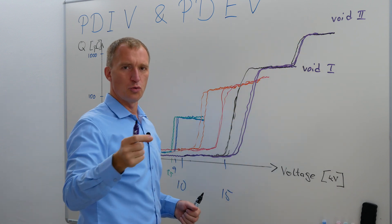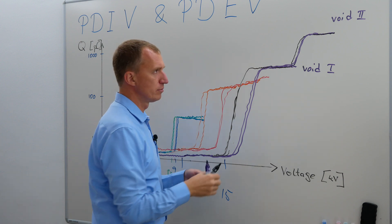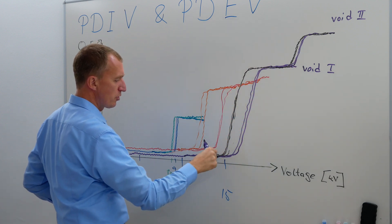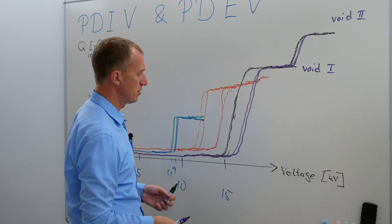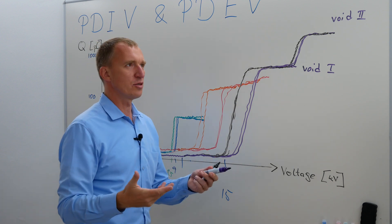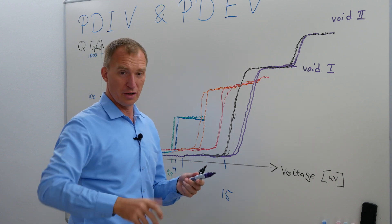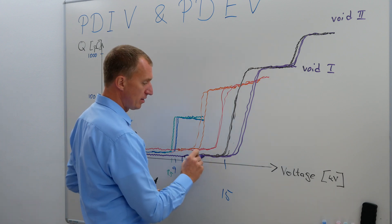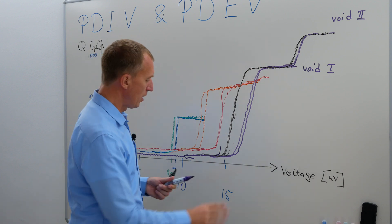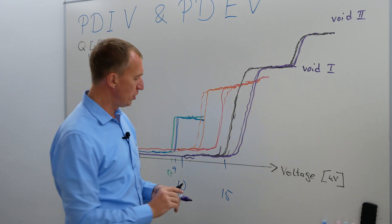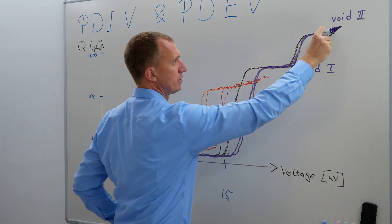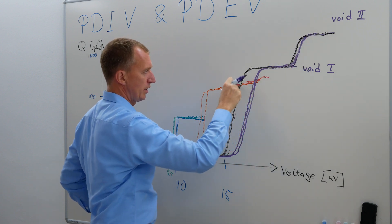A funny note: if you don't wait long enough between runs, your inception voltage might get smaller. The extinction voltage very often stays the same, provided you haven't already destroyed the solid insulation. 'Wait long enough' is an interesting question — it could be a couple of seconds or a couple of minutes. My suggestion: if you're at the noise floor after reducing voltage, wait one or two minutes before going up again to determine the inception and extinction voltages.